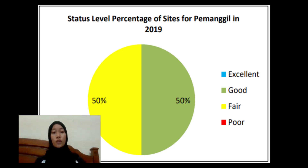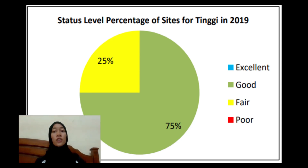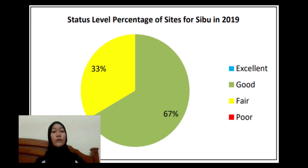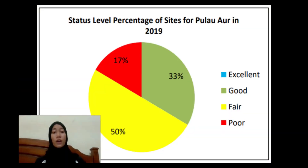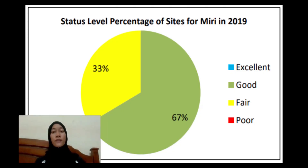A total of 4 coral reef sites were surveyed in Pemanggil and 50% of the reef were in good condition and the remaining 50% were in fair condition. A total of 4 coral reef sites were surveyed in Tinggi and 75% of the reef were in good condition and the remaining 25% were in fair condition. A total of 6 coral reef sites were surveyed in Sibu Island, where 67% of the reef were in good condition and 23% were in fair condition. A total of 6 coral reef sites were surveyed in Pulau Aur and Dayang, where 50% of the reef were in fair condition and 23% were in good condition. In Miri, 67% of the sites were in good condition and the remaining 33% were in fair condition.